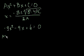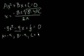What does b equal? b is the coefficient on the x term, so that's this term here. So b is also equal to minus 9. And c is the constant term, which in this example is 6. So c is equal to 6.